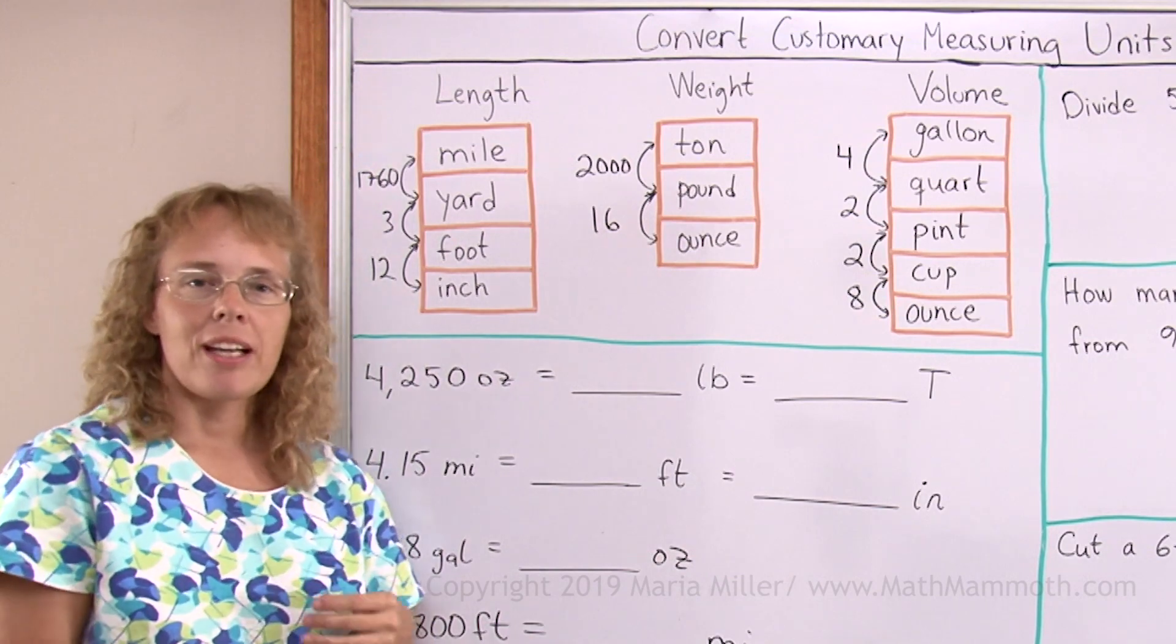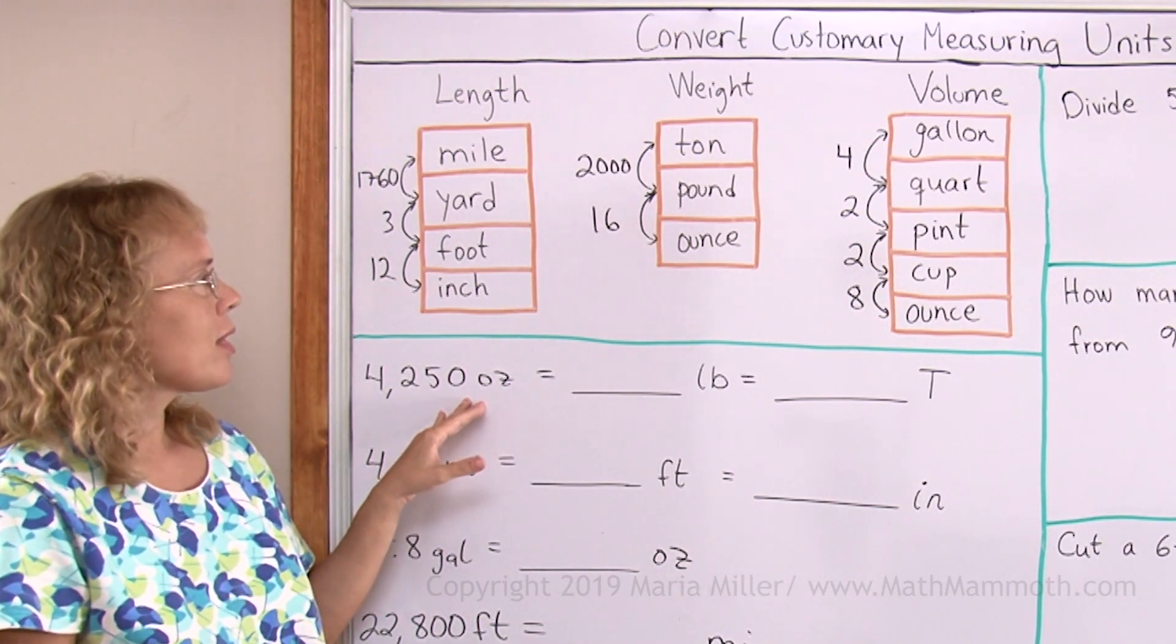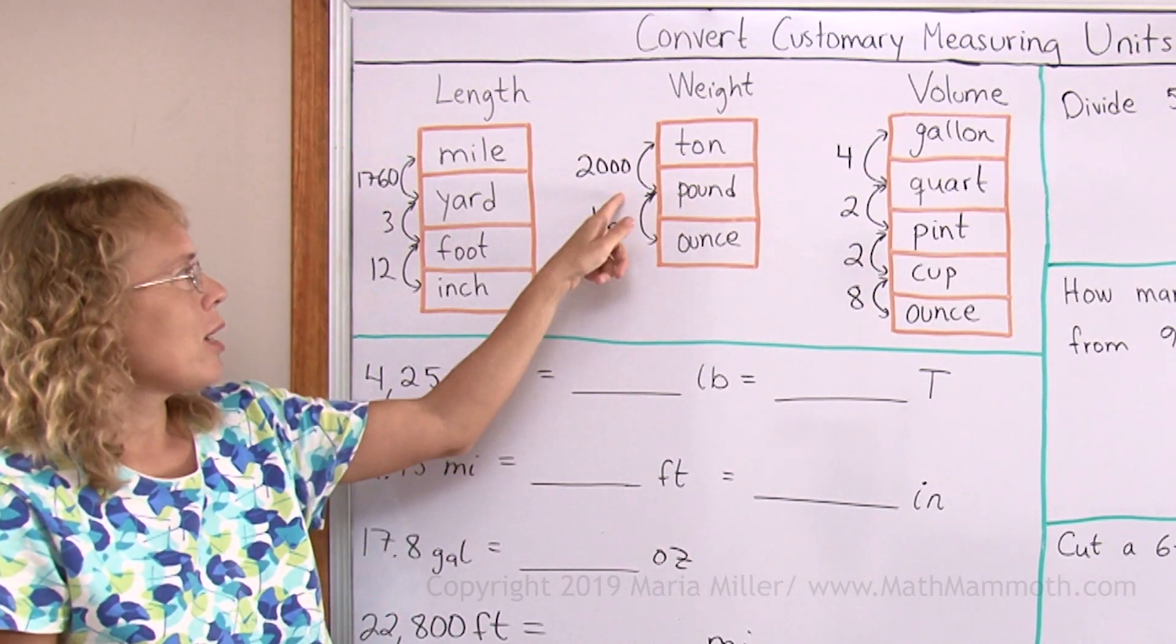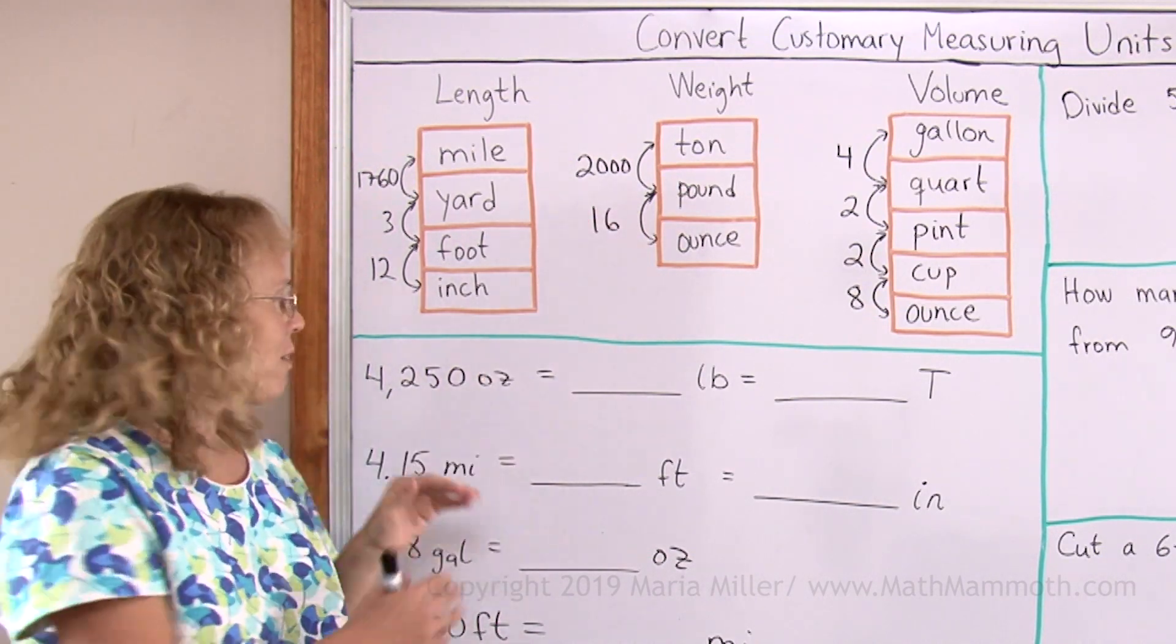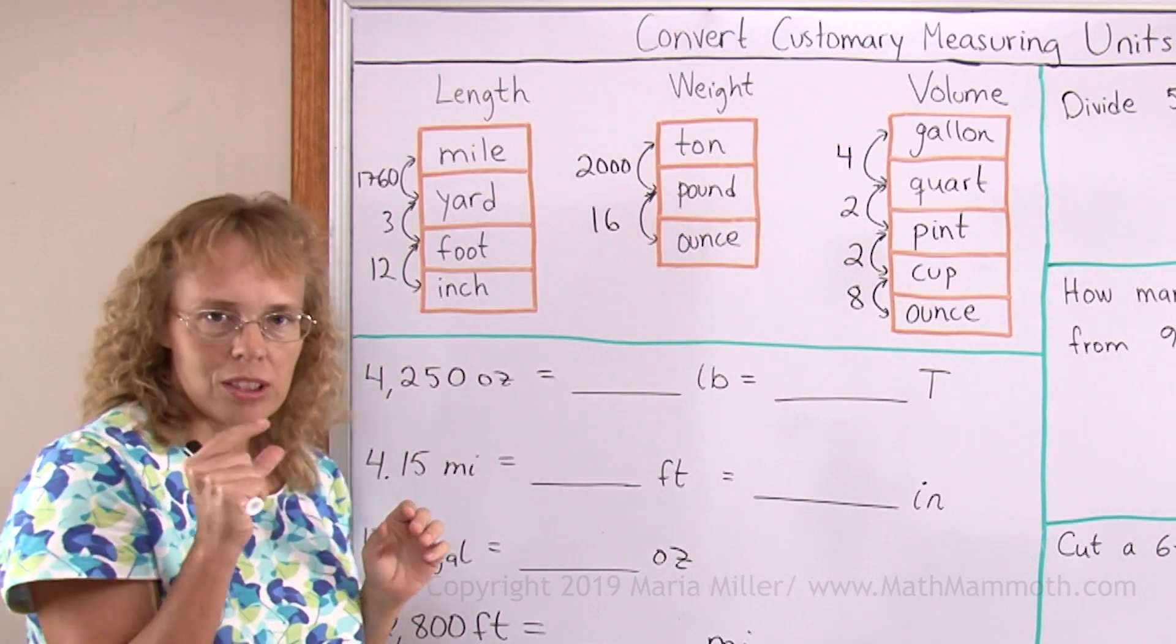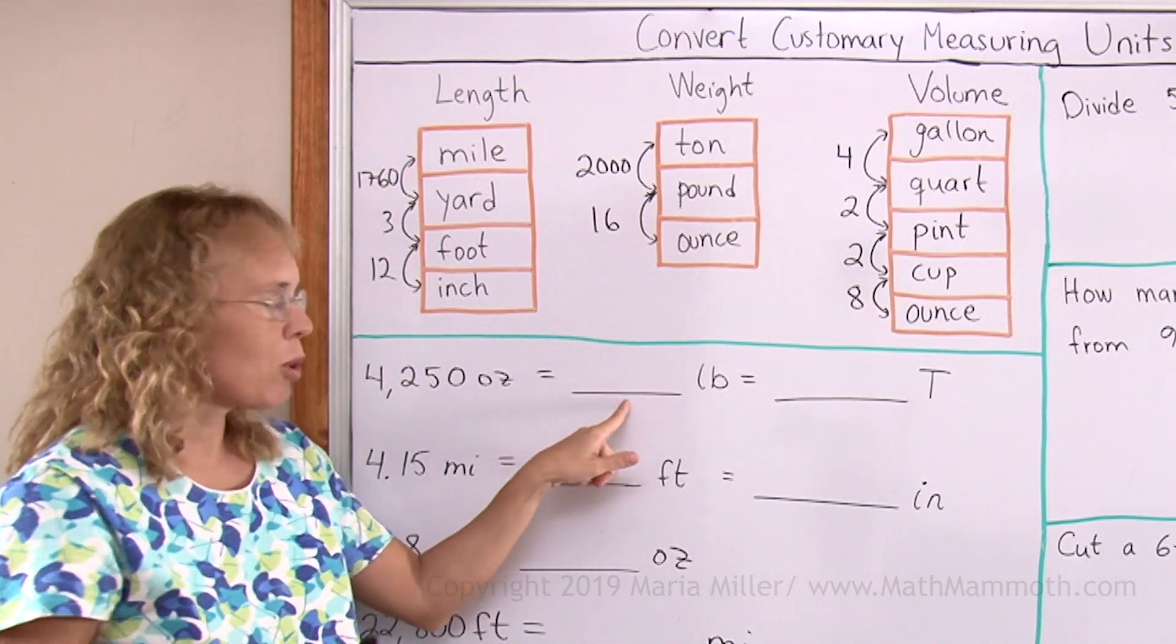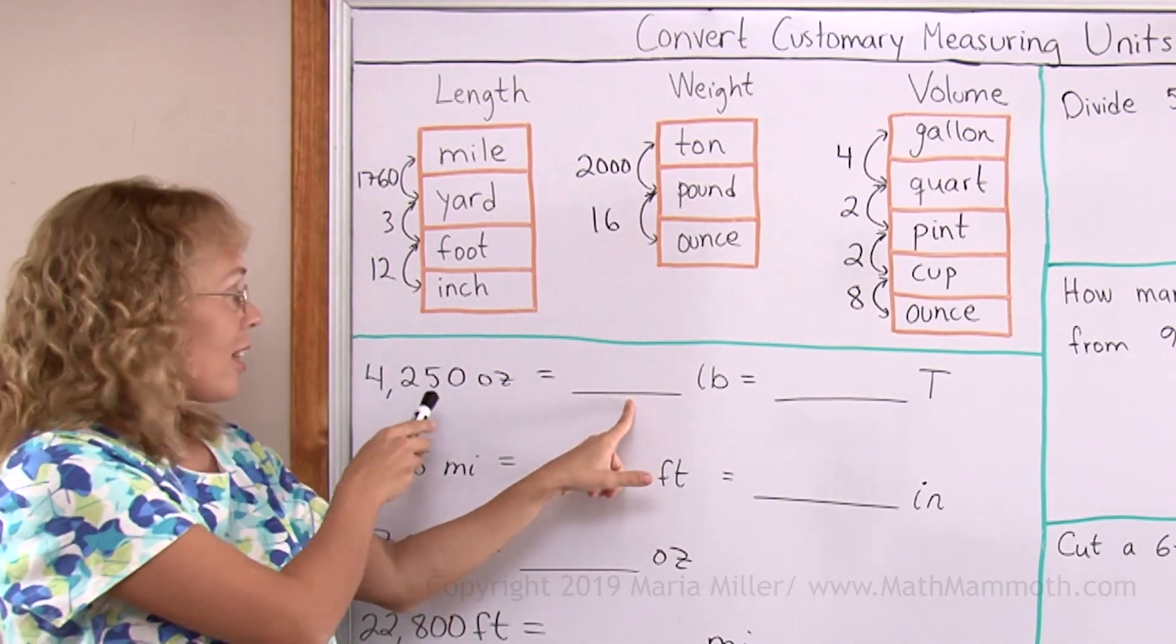And think of it this way. Let's say for example that these ounces here, if you want to change them to pounds, there's lots of these little ounces. An ounce is a little unit and you have lots of them. So when you get your number here, will this number need to be a smaller number or bigger number than this?